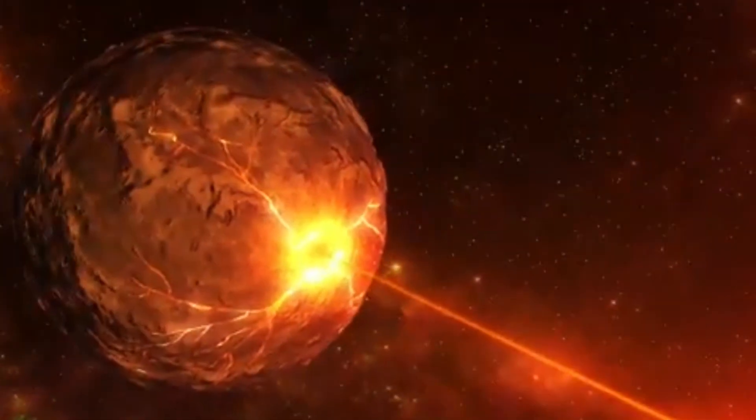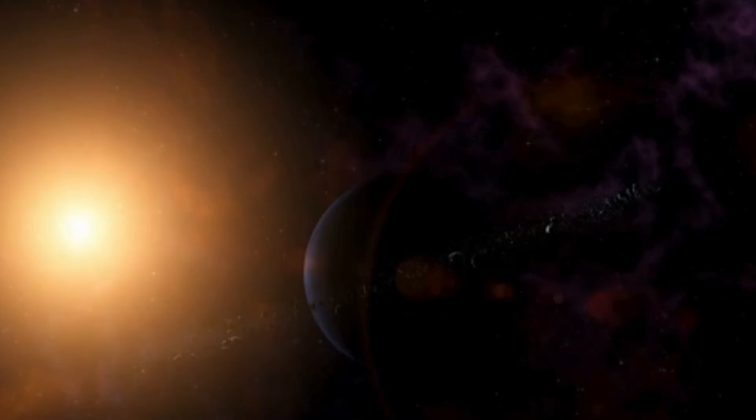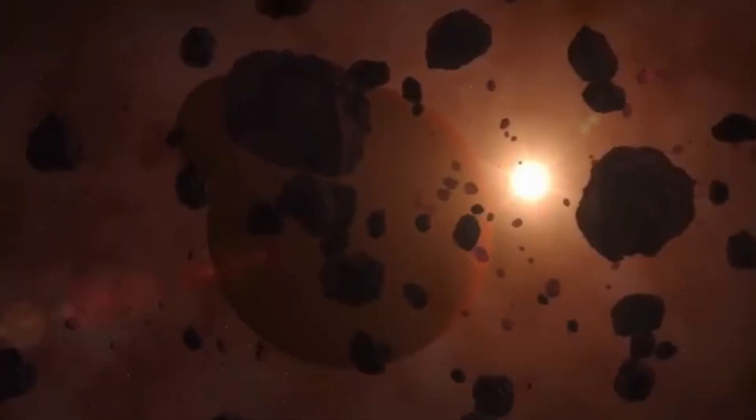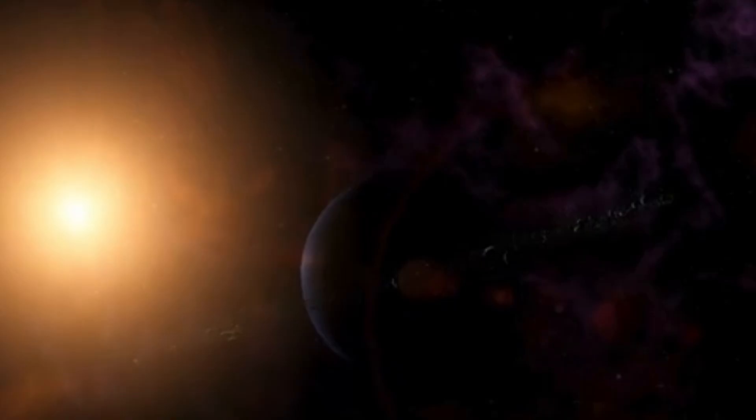Astronomers have just discovered something incredible, a celestial object that's been silently orbiting the sun for over 25,000 years. It's ancient, mysterious, and unlike anything we've seen before. Could this be the solar system's hidden time capsule?